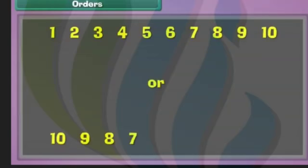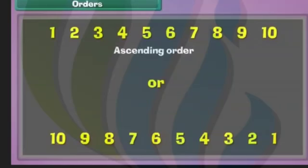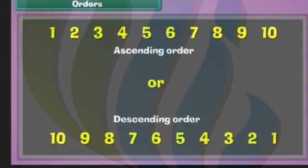Numbers can be arranged as one, two, three, four, five, six, seven, eight, nine, ten — or reversed as ten, nine, eight, seven, six, five, four, three, two, one. Arrangement of numbers from the smallest to the largest is called ascending order. Arrangement of numbers from the largest to the smallest is called descending order.